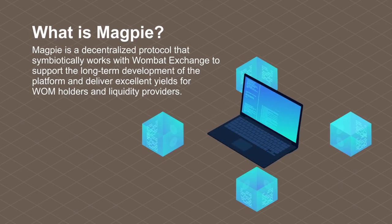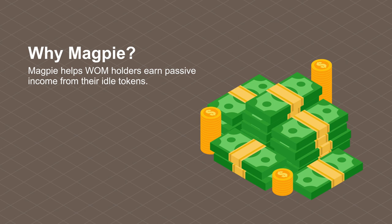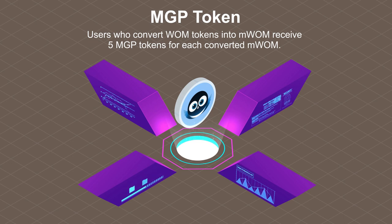Magpie is a decentralized protocol that symbiotically works with Wombat Exchange to support the long-term development of the platform and deliver excellent yields for WOM holders and liquidity providers. Magpie helps WOM holders earn passive income, LPs generate boosted yield without needing VEWOM, and voters acquire Wombat Exchange voting power cost-effectively. Users who convert WOM tokens into MWOM receive 5 MGP tokens for each converted MWOM — available only until 4 million WOM are converted.